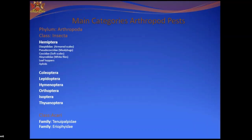Under the order Coleoptera, which are the beetles; Lepidoptera, the moths and butterflies; Hymenoptera, wasps and ants; Orthoptera, the locusts and grasshoppers; Isoptera, termites; and Thysanoptera, the thrips. Under arthropods there are two classes — the insects and also the class of mites.